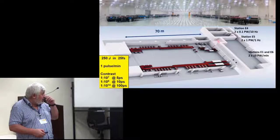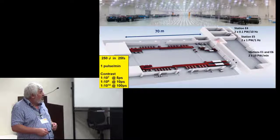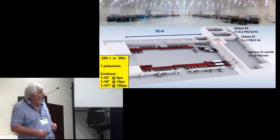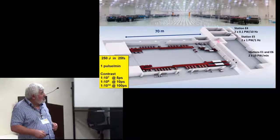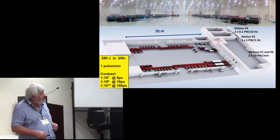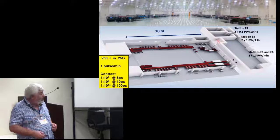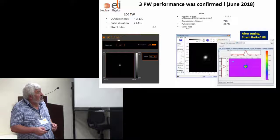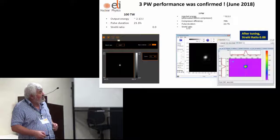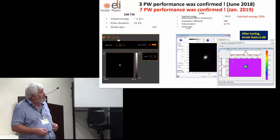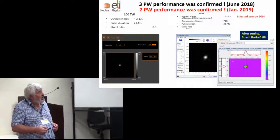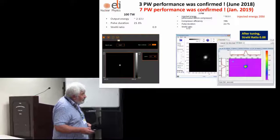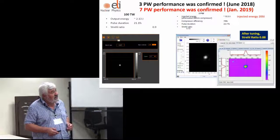The keyword is contrast. We'll have pulses with 250 joules in 25 femtoseconds and we expect 100 picoseconds before the pulse of 10 to the minus 14 contrast. Triple petawatt performance was confirmed in June last year. You can see pictures of the beam spot. Last week we confirmed 10 petawatt, which means the injected energy is already about 110 joules.